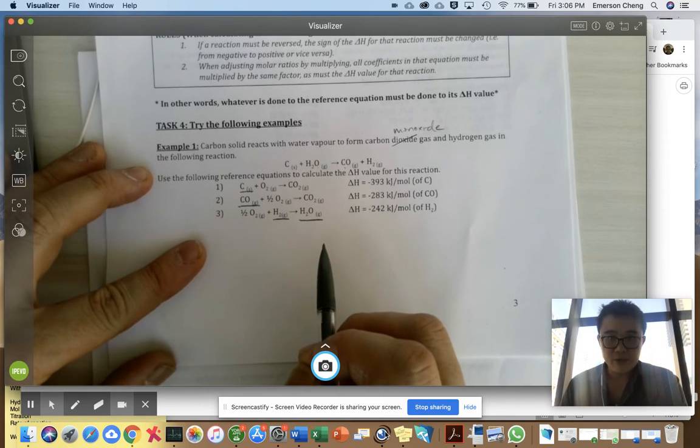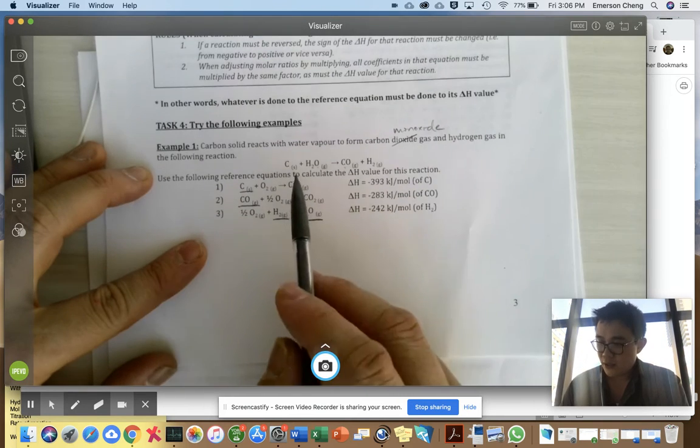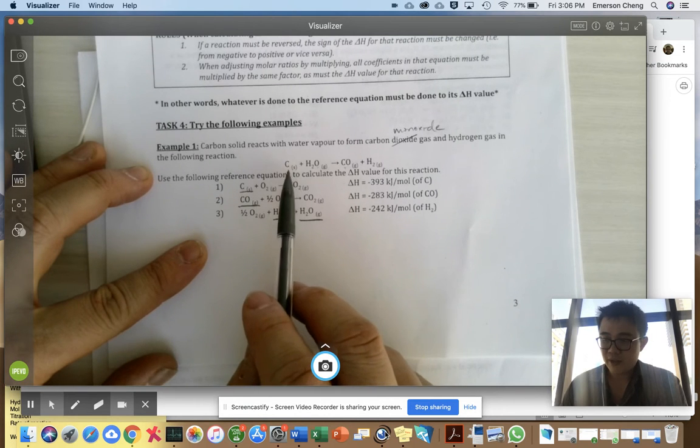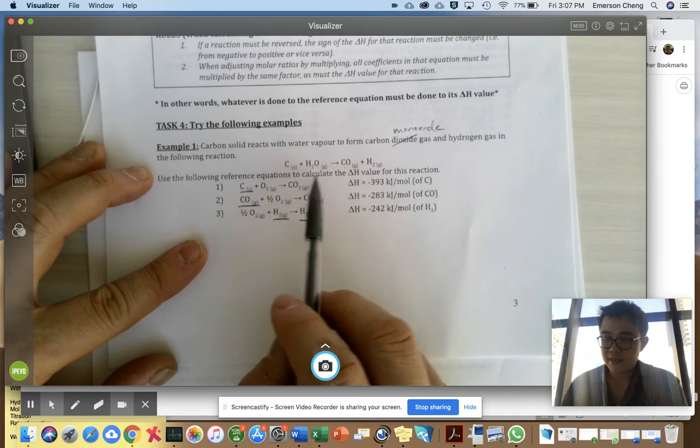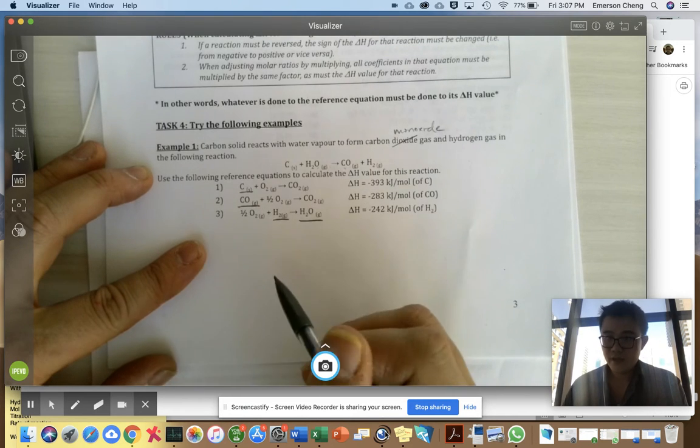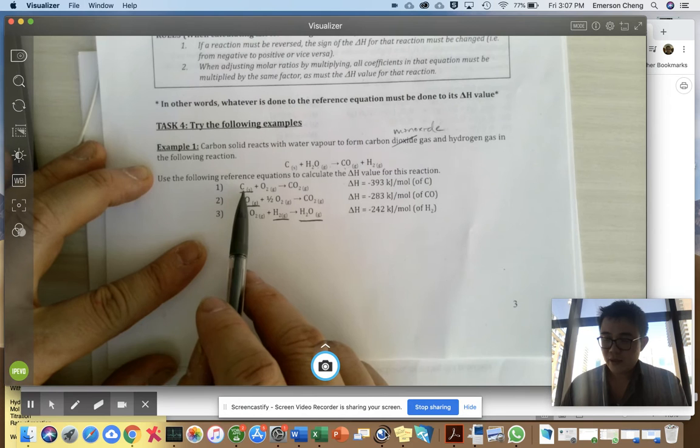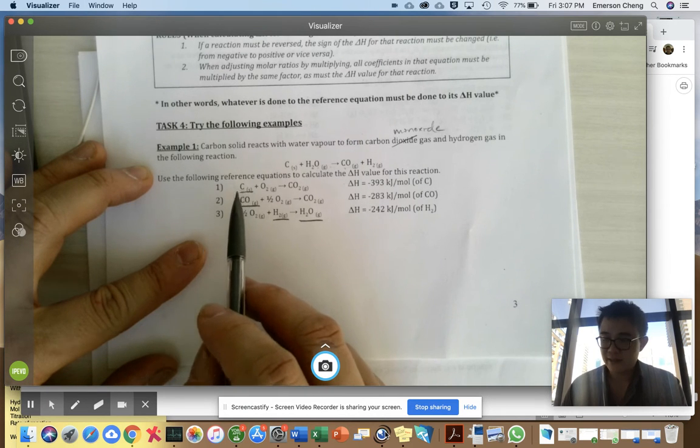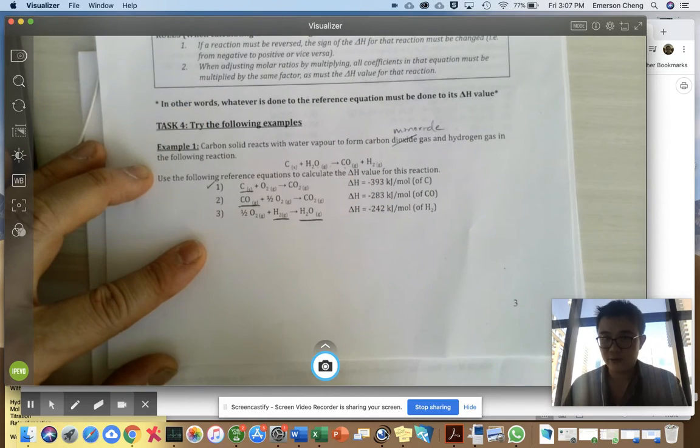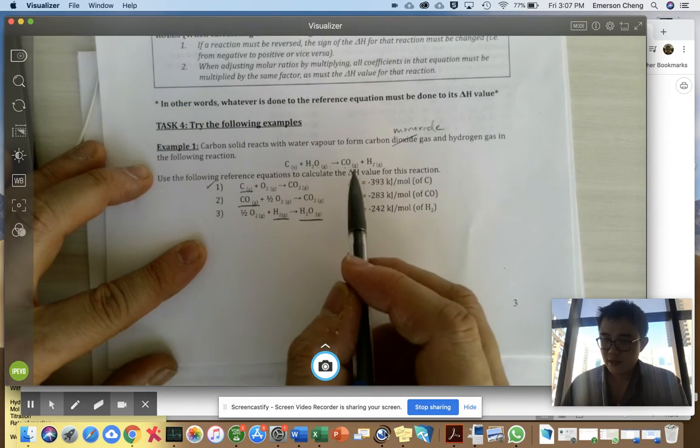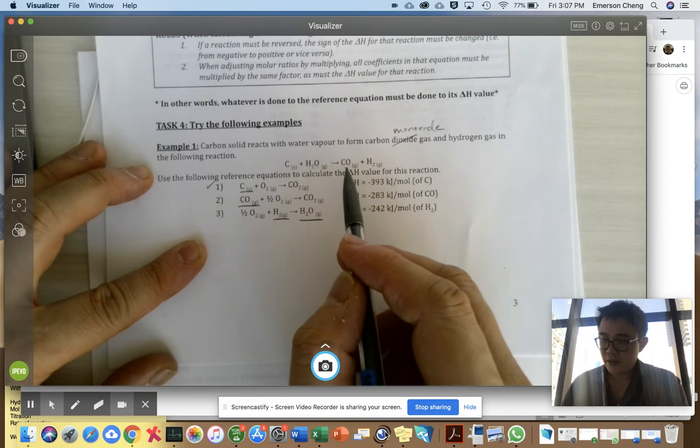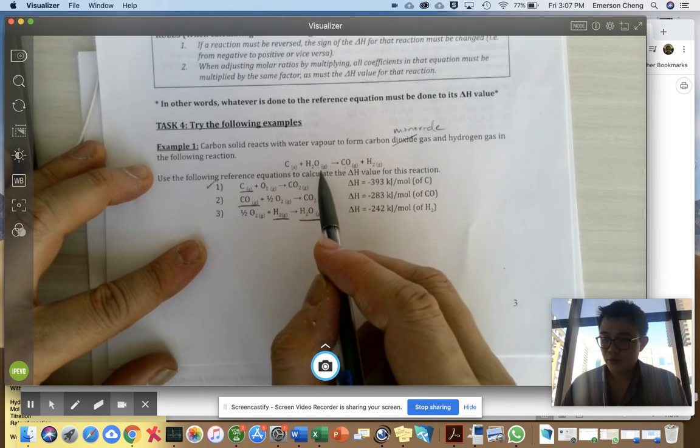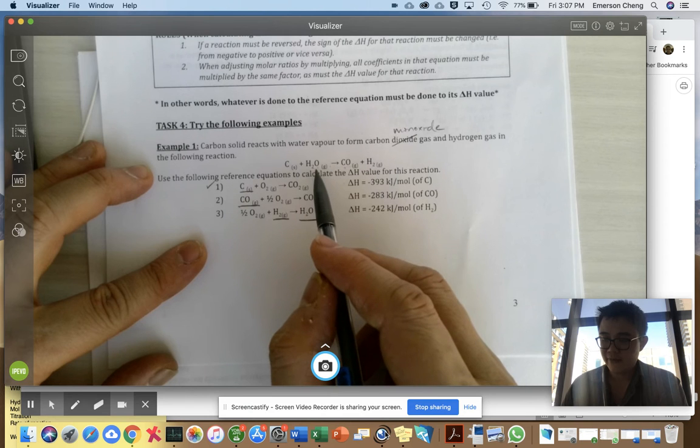Now the second step, what you need to do is you need to look at what you want and see if it is on the same side of the arrow as this equation that you want to try to get to. So in this case, carbon you want on the left-hand side, yes you have on the left-hand side, so this equation is good, you don't need to do anything to it. Water, H2O, you want water on the left-hand side of the equation, but you have water on the right-hand side of the equation.